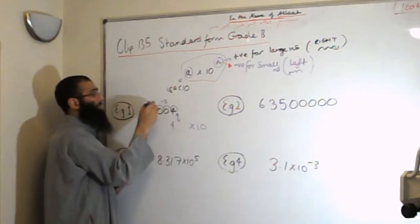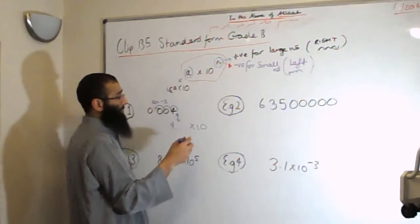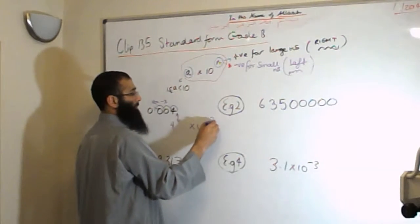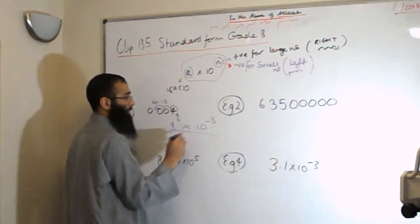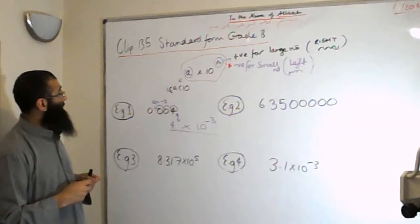Because we move to the left, as we said, it's going to be minus. Here you go, there's your answer. 4 times by 10 to the minus 3 is the first one.